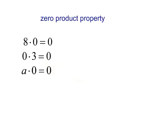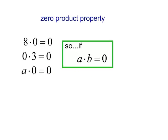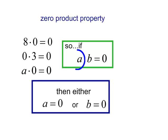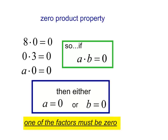So if I tell you that A times B equals 0, what do you know about A or B? Hopefully, you are saying that either A will equal 0 or B will equal 0. If I multiply two things, I tell you the product is 0. Then one of the factors must be 0.